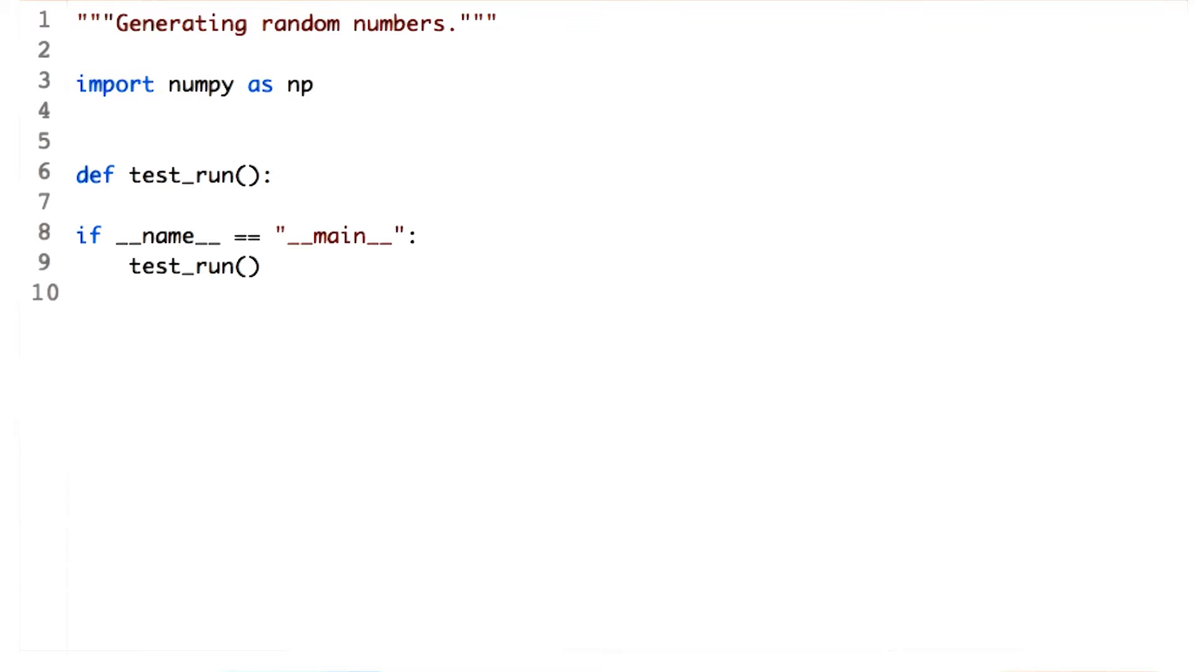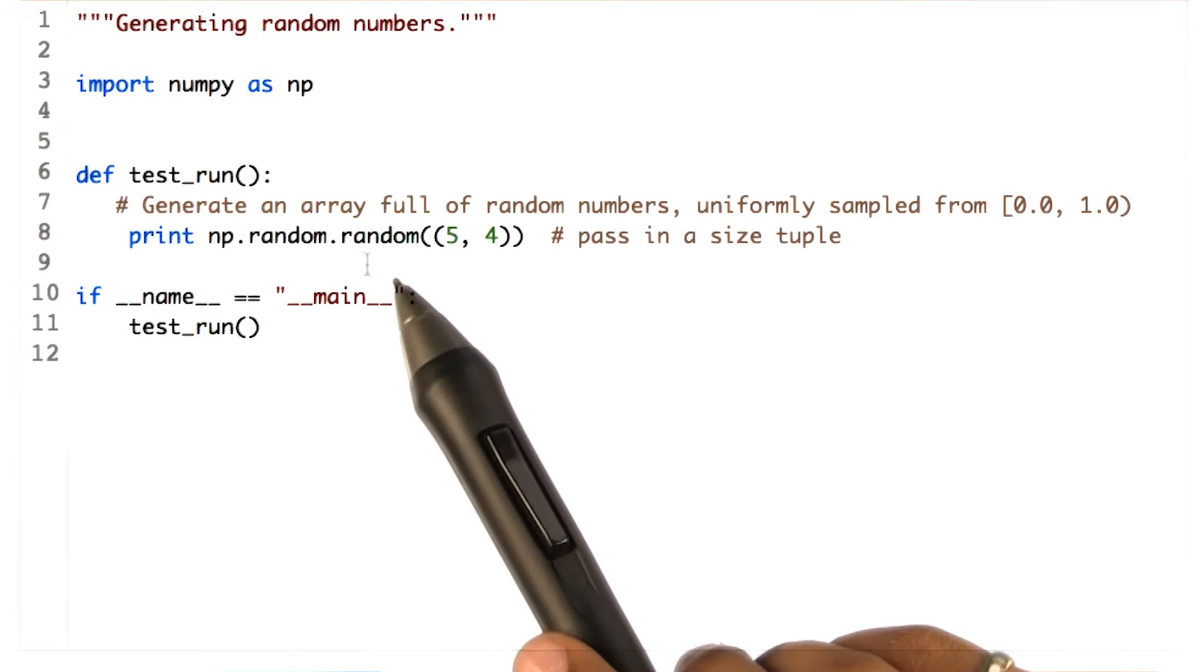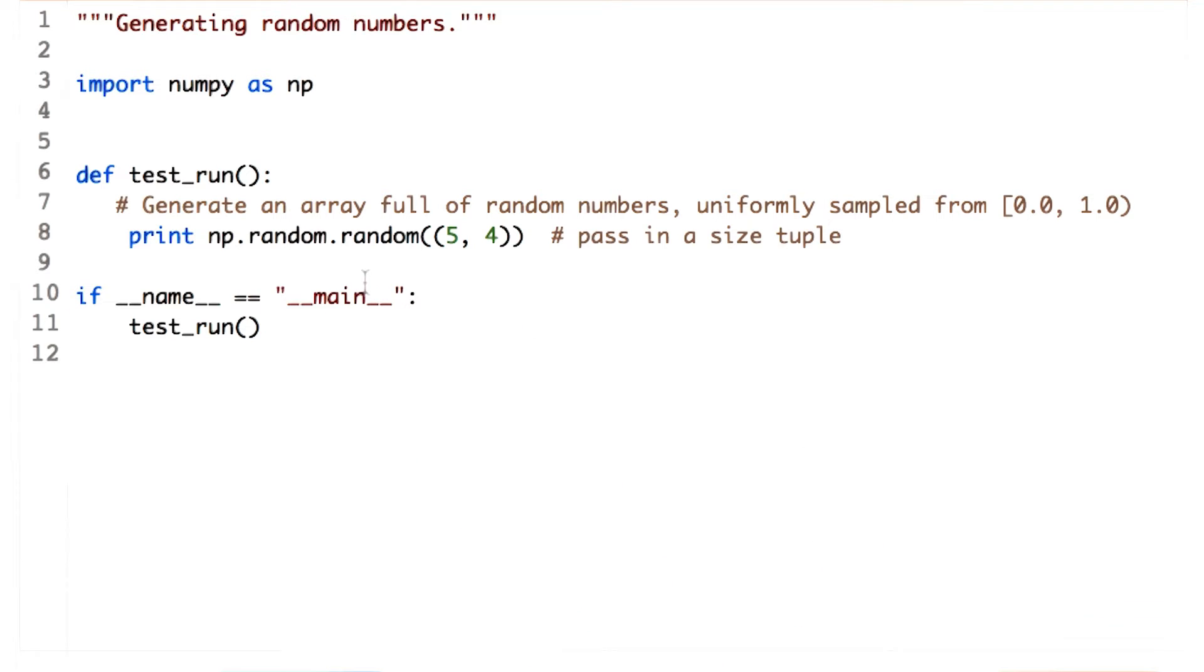NumPy comes with handy functions to generate arrays filled with random values. These functions are defined in NumPy's random module. The random function generates uniformly sampled floating point values between 0 and 1, with 0 inclusive and 1 exclusive.